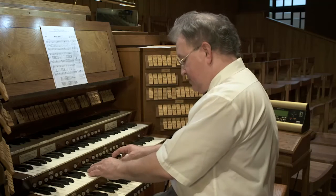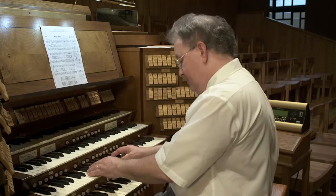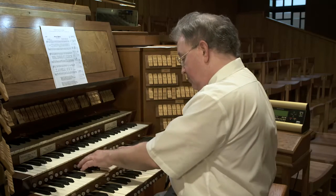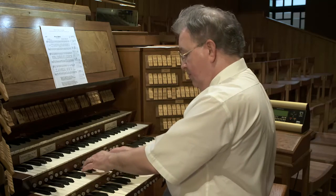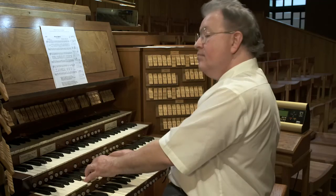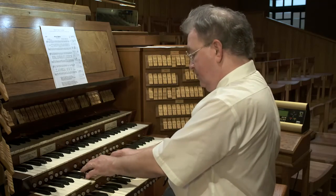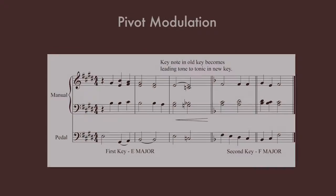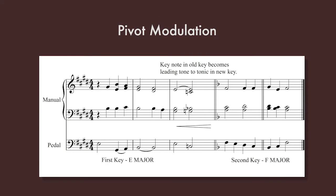Let's say in this hymn, 'Fairest Lord Jesus,' at the very end... So, as we see, we were in E major; we used the tonic keynote of E as the leading tone in the key of F, and by going from the tonic to a dominant of F, we arrived there. It was very quick, and it might be considered a bit fast and abrupt.